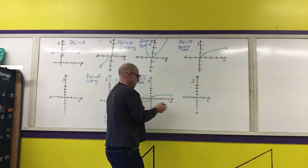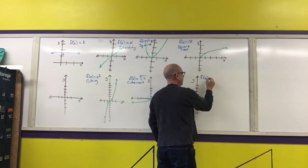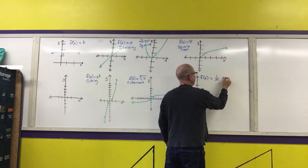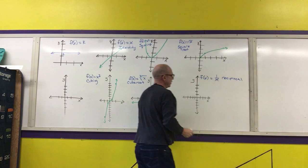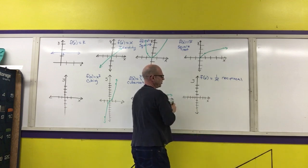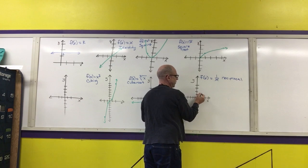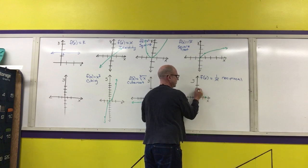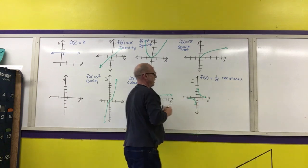The next graph is f(x) = 1/x, called the reciprocal function. It is a hyperbola in quadrants one and three with the axes as asymptotes. At x = 1, y = 1; at x = -1, y = -1, and it approaches both axes.